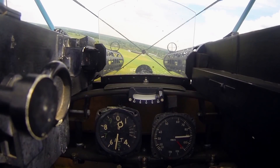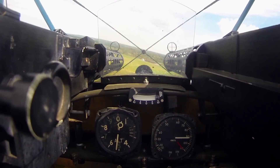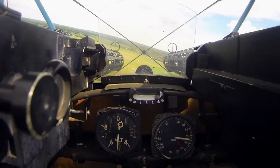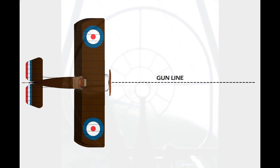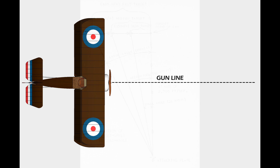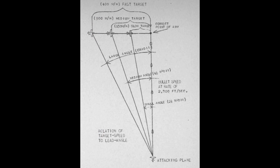Gun sights on aircraft started as simple crosshair style fixed sight arrangements. The crosshair represented the gun line, or where the barrel of the gun was actually pointed. With these earliest gun sights, the pilot had to work out the lead angle required to hit the target in their heads.